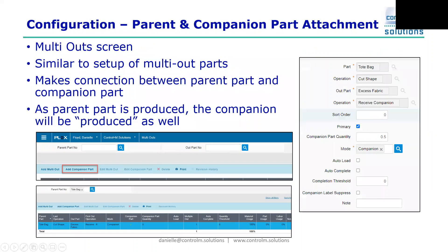Once the parts are created, we have to make a connection within PLEX between our parent part and our companion part, and this is done within the multi-out screen. With some additional setting configurations, you can get a new button called 'Add Companion Part' on your multi-out screen. When you add a companion part, you'll define your parent part and your companion part. So at our 'Cut Shape' operation for our tote bag, we also produce this companion part of excess fabric, and that excess fabric goes immediately into a receive operation on the process routing.